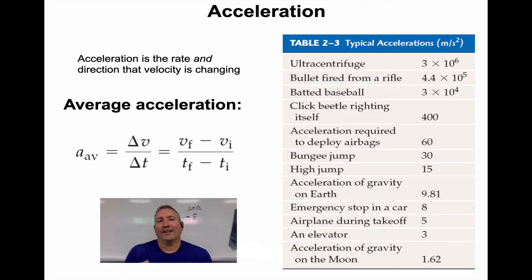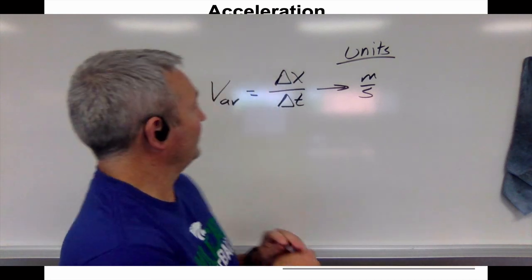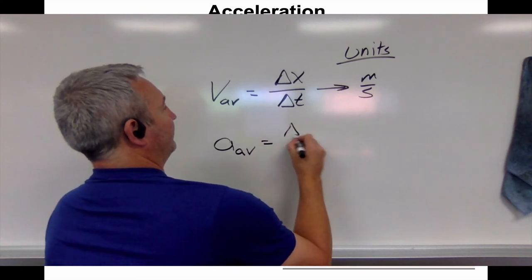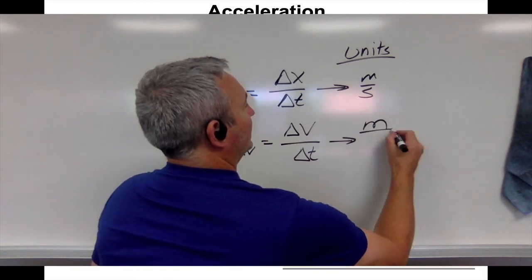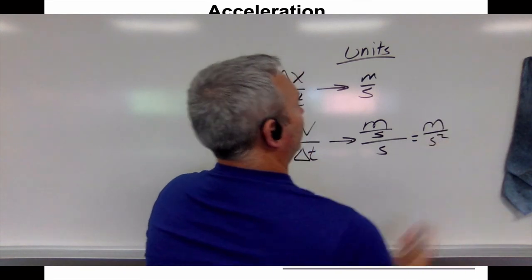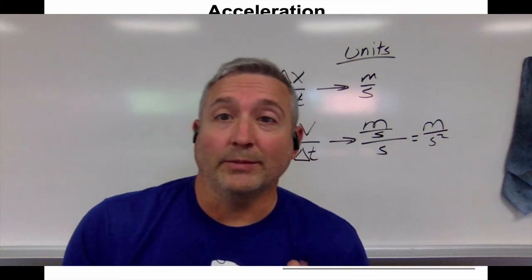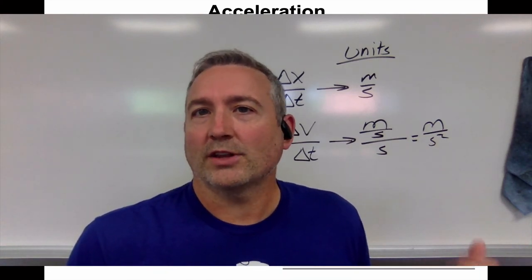Acceleration is how rapidly the velocity is changing. The formula for average acceleration looks very similar to average velocity — it's delta V over delta T: the change in velocity over the change in time. Acceleration is measured in meters per second per second. When we write it, we usually write meters per second squared. There is no such thing as a square second, so that can be confusing, but mathematically meters per second divided by seconds equals meters per second squared.